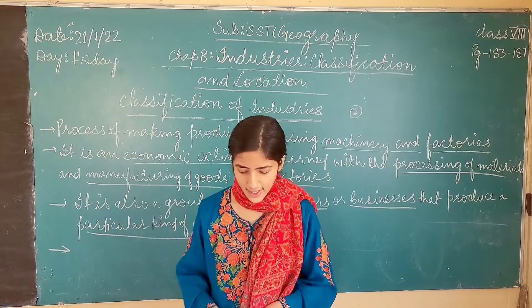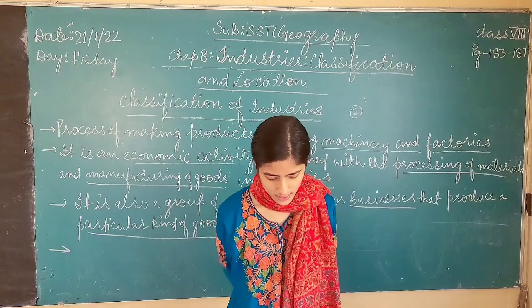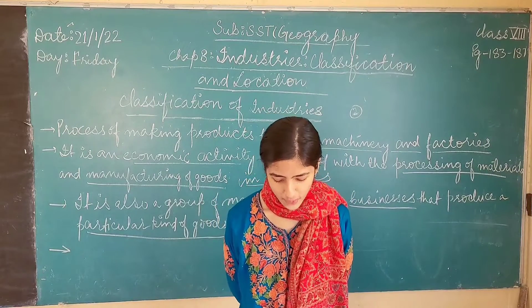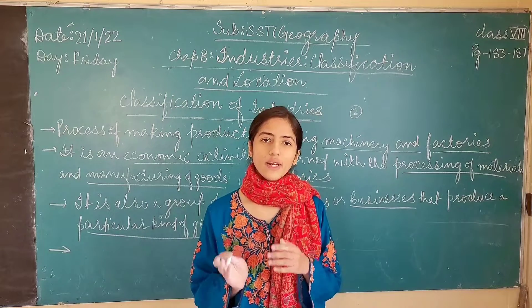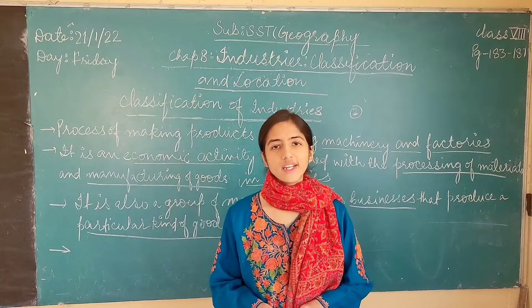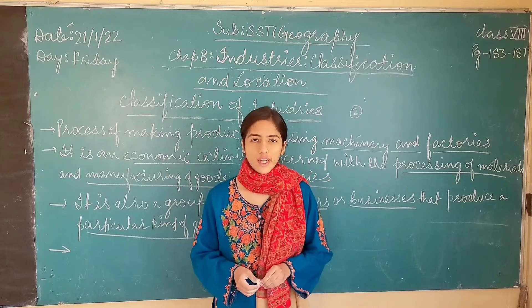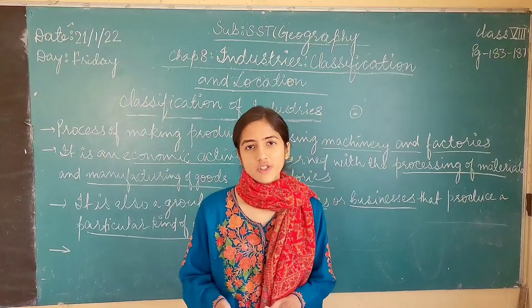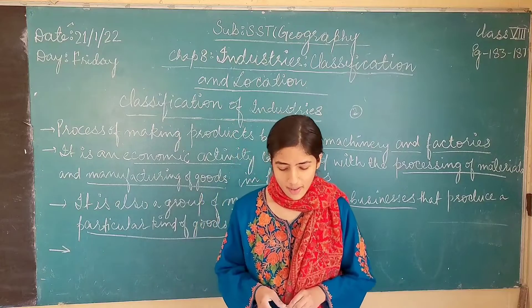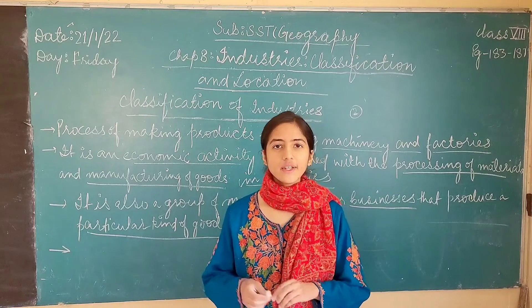Let us understand what the word manufacturing means — it is given in your book on page 183. The technique of converting natural or manmade raw materials into finished products is termed as manufacturing. The process of manufacturing is a secondary activity, not a primary activity. Primary activities relate to agriculture, farming, and fishery.